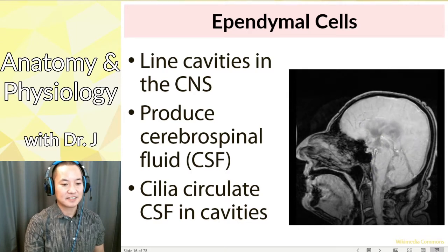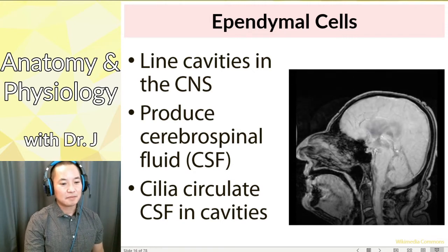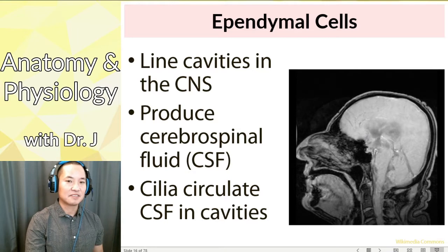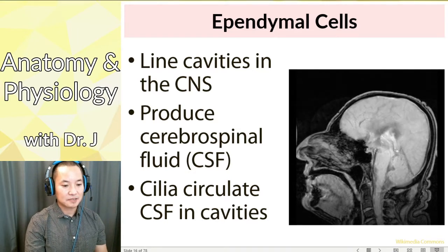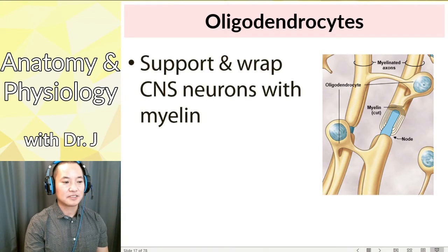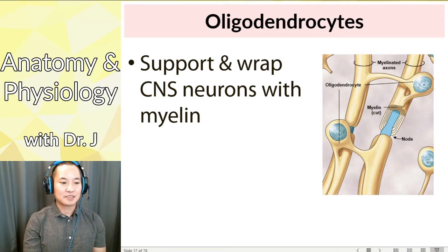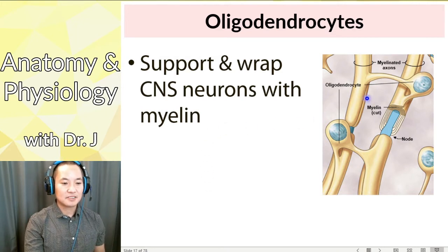The cerebrospinal fluid circulates within your brain and spinal cord — this is normal. You do have some fluid inside your brain, but you don't want too much. Moving on, oligodendrocytes support and wrap central nervous system neurons with myelin. Myelin is a substance found in your nervous system that helps protect neurons and aids in their function — we'll get to that very soon.